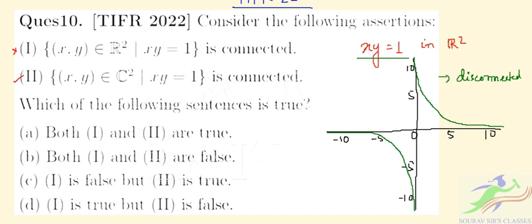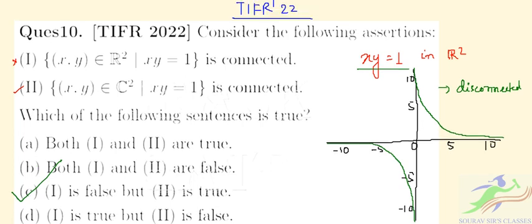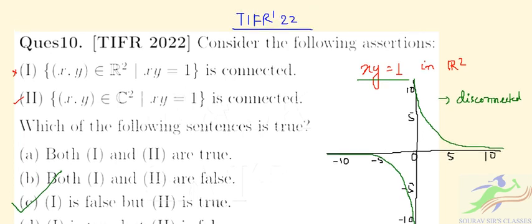The correct option here for question 10 is C. That is, I is false but II is true. So option C is the correct option for question number 10.